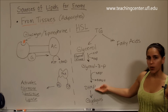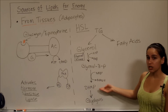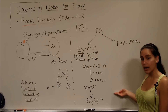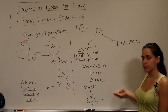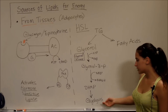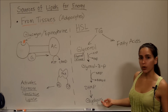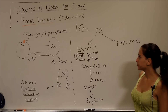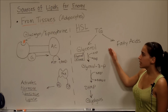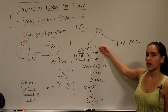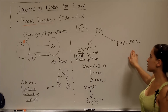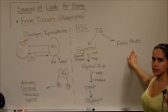Dihydroxyacetone phosphate is interconverted into glyceraldehyde-3-phosphate and continues to be oxidized in glycolysis to yield pyruvate. So as we can see, we also get energy from glycerol, but not as much as from fatty acids.